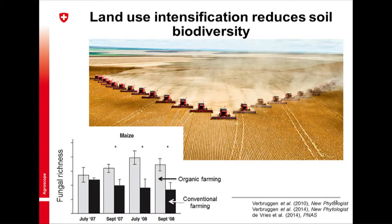Coming toward a conclusion: this morning we heard from several people, and there are several posters, showing that land use intensification reduces various groups of soil organisms and reduces soil biodiversity. We have shown this for mycorrhizal fungi — comparing organic farming with conventional farming across about 35 farms in the Netherlands, mycorrhizal diversity was higher in organic farming, which has more crop rotation and lower fertilizer inputs. With very intensive land use, the larger soil organisms usually disappear — with plowing and pesticide use, earthworms and larger organisms disappear.